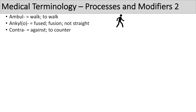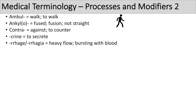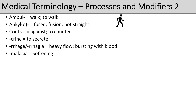The prefix 'contra' means against or to counter — think of contraindicated. The suffix 'crine' or 'crin' means to secrete — think of endocrine, paracrine, and exocrine, all relating to secreted hormones. The suffix 'rhagia' or 'rrhagia' means heavy flow or bursting with blood, typically used when something is bleeding heavily — like rhinorrhagia or menorrhagia. The suffix 'malacia' means softening. The suffix 'atresia' means perforation or opening.